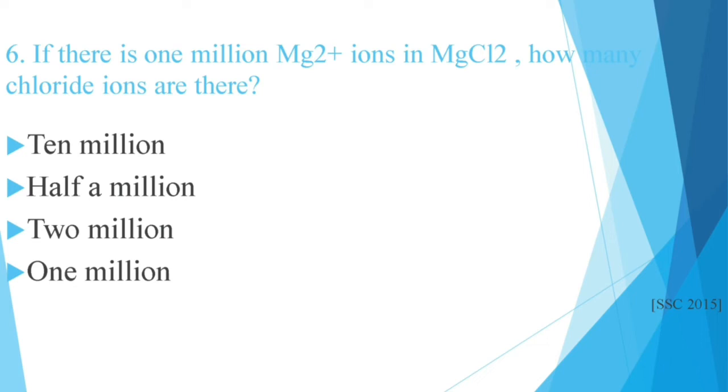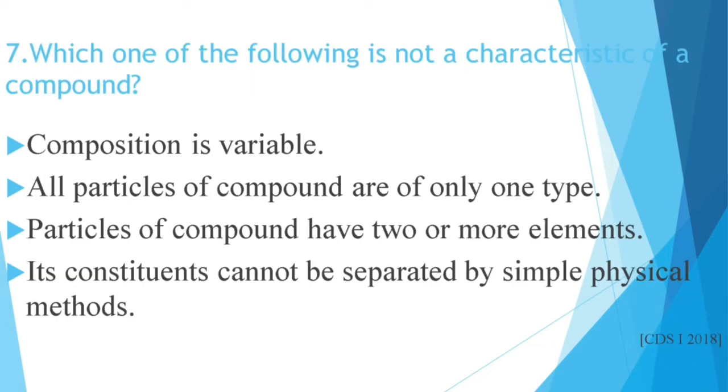Question number 7: Which one of the following is not a characteristic of a compound? Composition is variable. All particles of compound are of only one type. Particles of compound have two or more elements. Its constituents cannot be separated by simple physical methods. This question is CDS 1 2018. The correct answer is composition is variable, which is not a characteristic. All the others are characteristics, but composition is variable is not a characteristic.